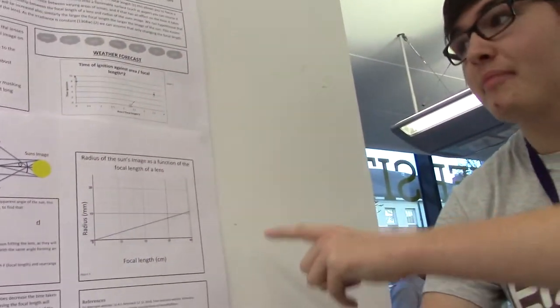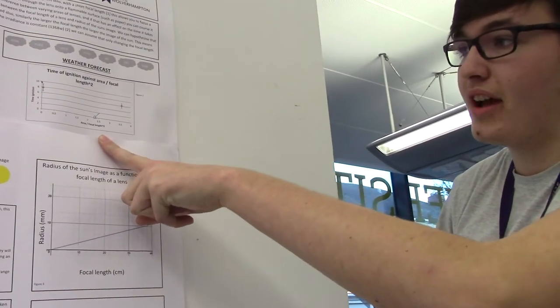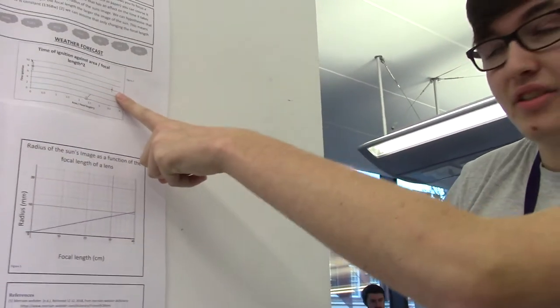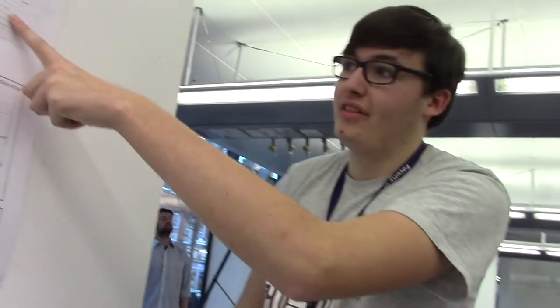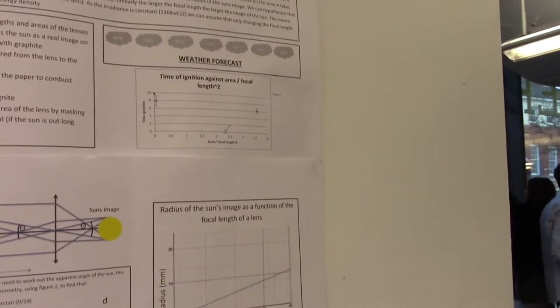This allows you to plot the time of ignition of some paper on a graph against the area divided by the focal length squared. You can see that this one is the Fresnel lens, so as you get a bigger area, the time of ignition shrinks down. We got our lenses ready and checked the weather forecast, and we had seven days of clouds.